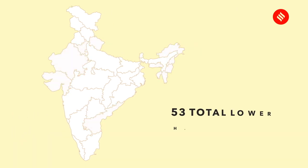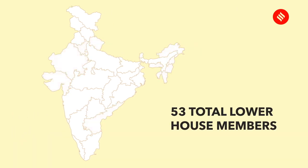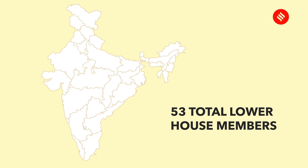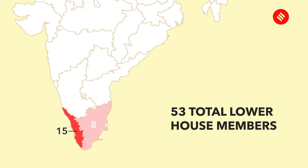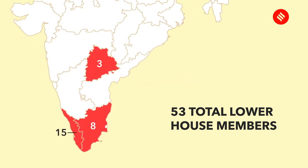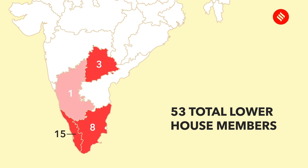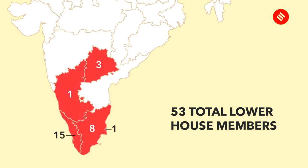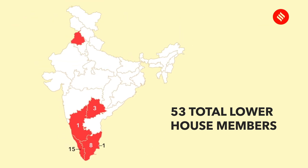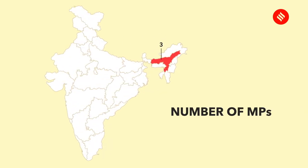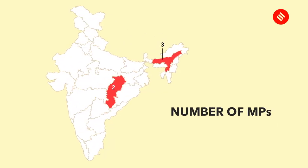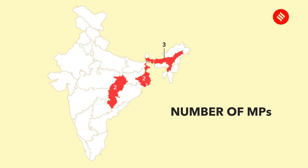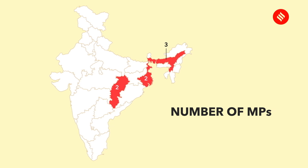Of its 53 total lower house members, 28 are from South India. There are 15 from Kerala, 8 from Tamil Nadu, 3 from Telangana, and 1 each from Karnataka and Puducherry. In North India, only Punjab had sided with the Congress in a significant manner, sending 8 members to the House. The Congress has 3 MPs from Assam and 2 each from Chhattisgarh and West Bengal. In several states, it has just 1 MP.